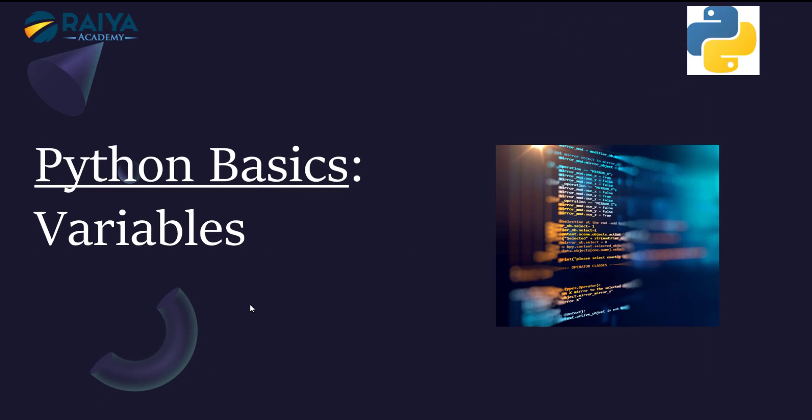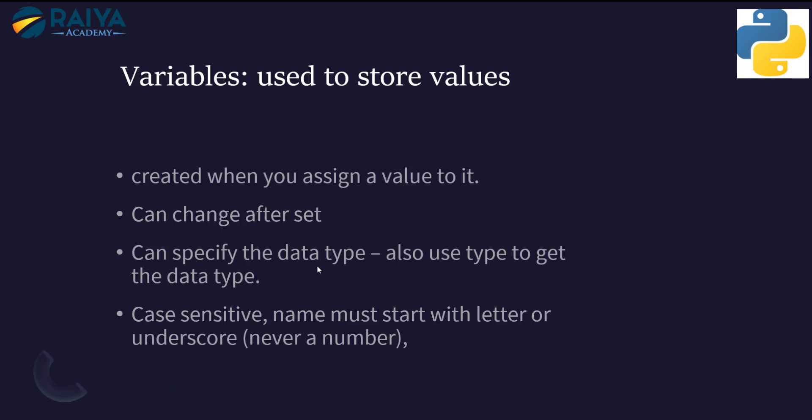In a previous video on numbers and strings, we touched on variables a little bit without getting deeper. In today's video we'll talk about Python variables specifically and in depth. Variables are used to store values — whatever the type of value is. In Python, you don't declare variables like you do in some programming languages; the moment you assign a value to a variable is when the variable is actually created.